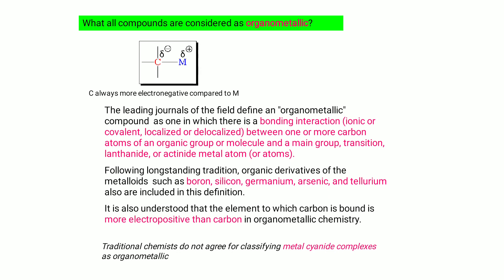Carbon is always more electronegative compared to the metal atom. The leading journals define the organometallic compound as one in which there is a bonding interaction — ionic or covalent, localized or delocalized — between one or more carbon atoms of an organic compound and a main group, transition, lanthanide, or actinide metal atom. This bonding interaction is between the carbon and the metal atom.